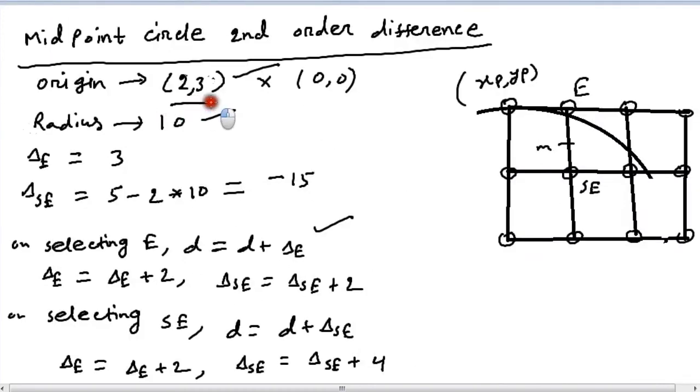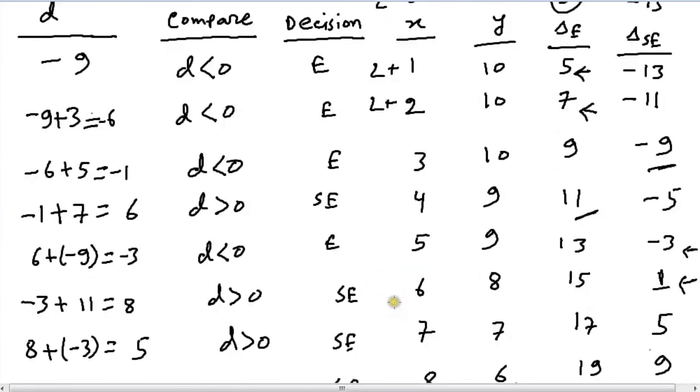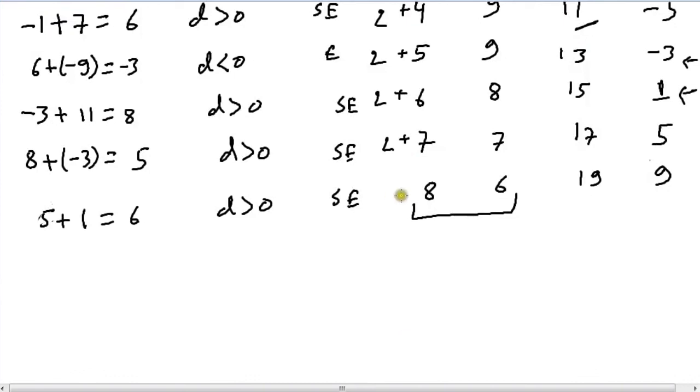And one more thing we have to do is remember the origin was at (2,3), so the abscissa was 2 and the ordinate was 3. So add the abscissa to all the x values - that will give us the correct x coordinate to all the pixels - and add the ordinate to all the y values.